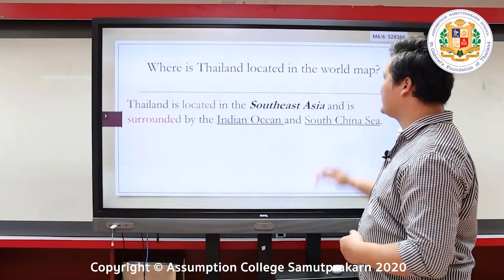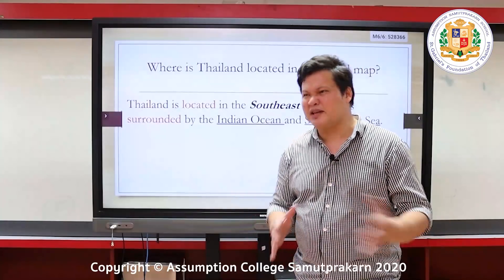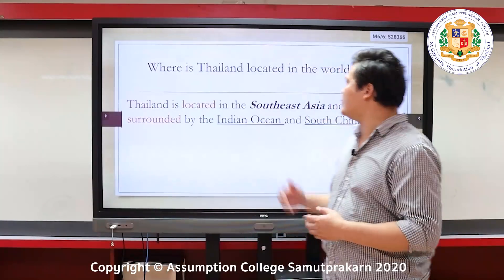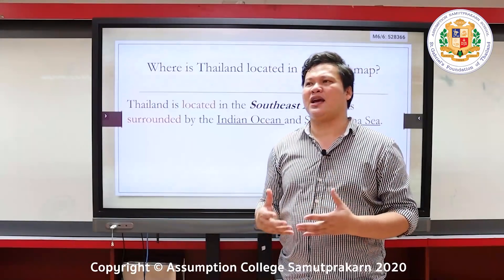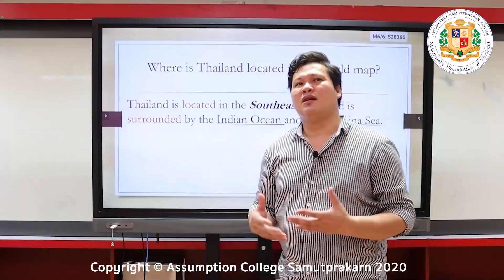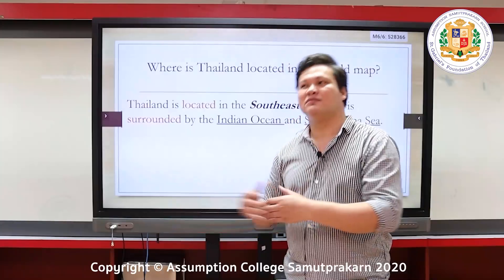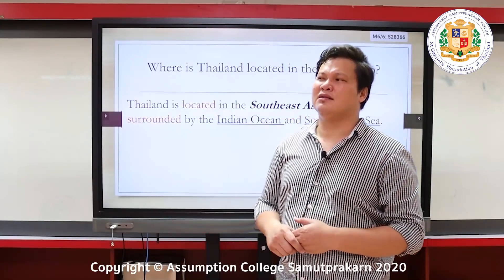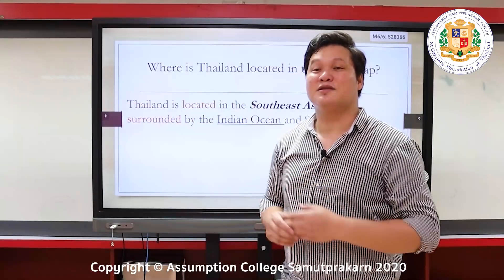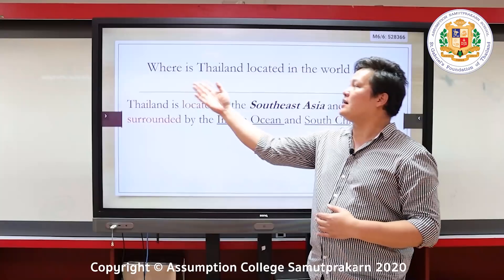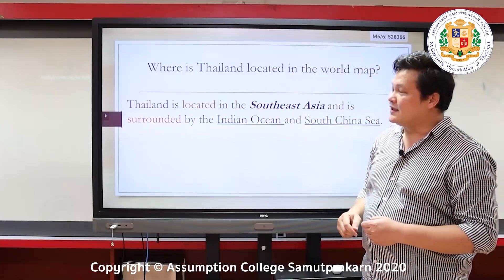Now to our lesson proper. Where is Thailand located on the world map? When we say located, it means where the place is found. For example, where is Assumption School located? It's in Samut Prakan. Where is the basketball court located? It's in the sports center. In the same way, where is Thailand located on the world map? Let's read together.